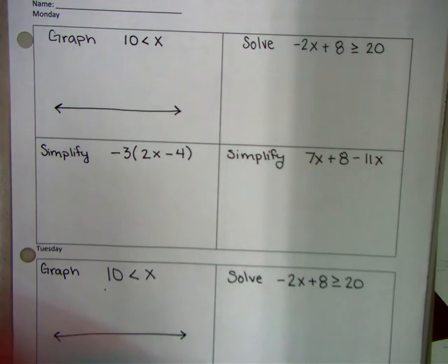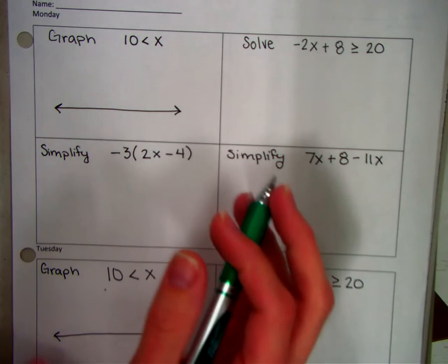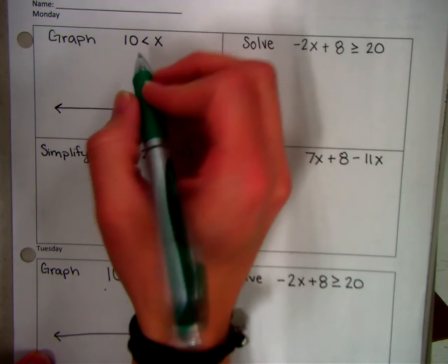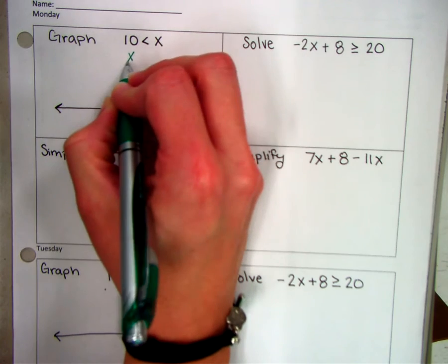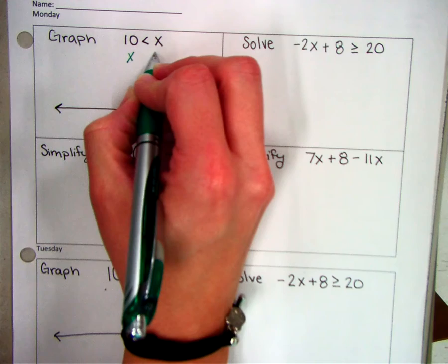Okay, so the first one that we're going to graph is not in VIN form. So in order to graph it, it's easier if it is in VIN form. Then you want the variable first, then the inequality circle, and then the number.